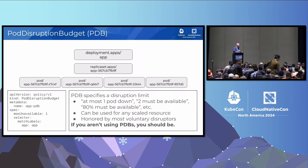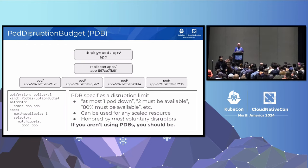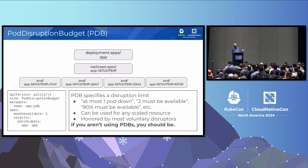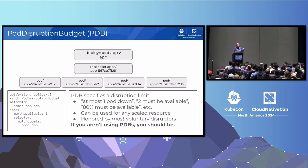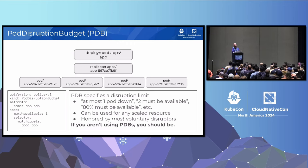One big one I'll mention is pod disruption budget, because it interacts a lot with the topics we discuss later. PDBs specify a disruption limit: at most one pod down, two must be available, 80% must be available, etc. In general, PDBs are meant to protect replicated apps and can be used on any scaled resource. They are honored by most voluntary disruptors. The one case where it's best-effort is out-of-resource evictions. If you aren't using PDBs, you should be.